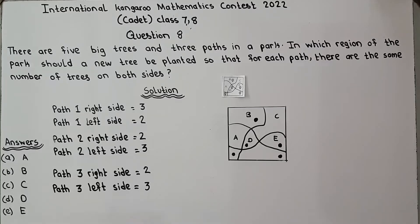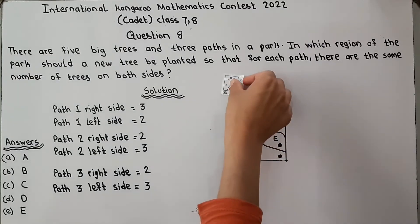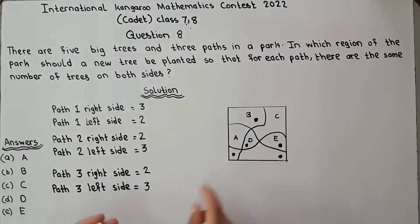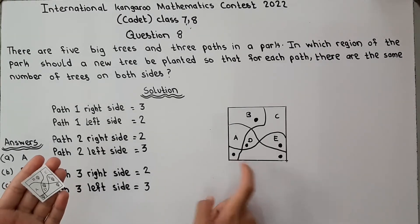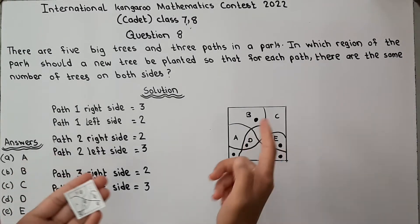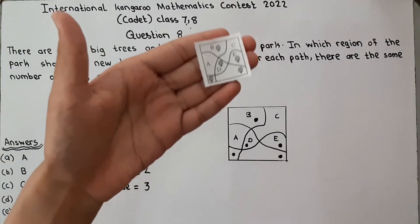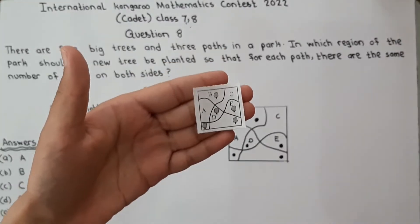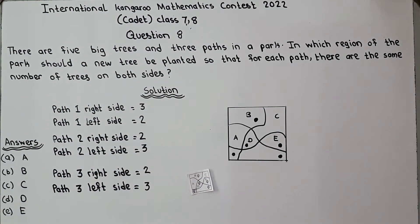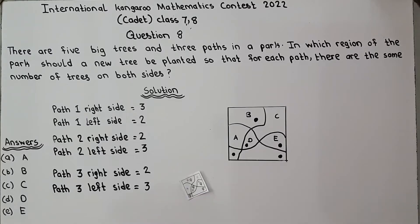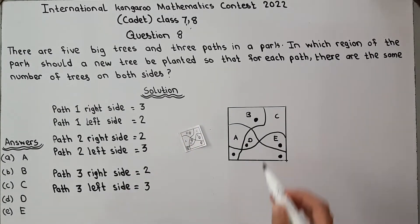So the question is: there are 5 big trees. These dots represent the trees — 1, 2, 3, 4, 5 — and you can see them in the picture as well. There are 5 big trees and 3 paths.